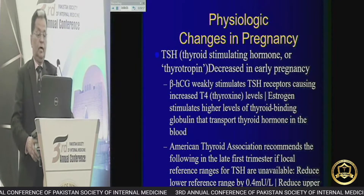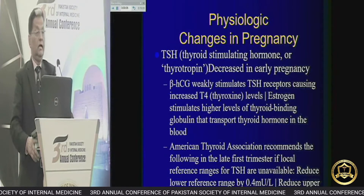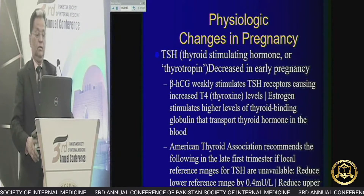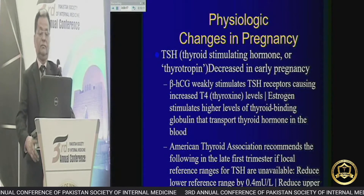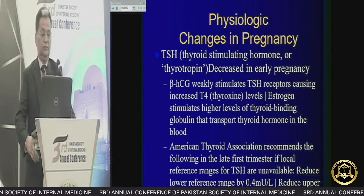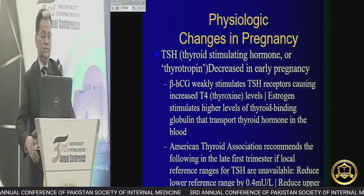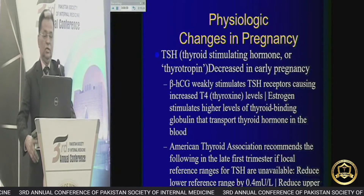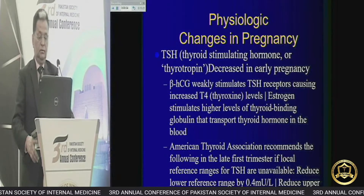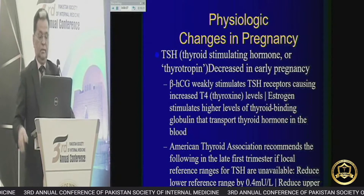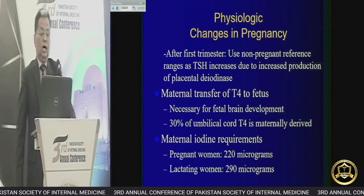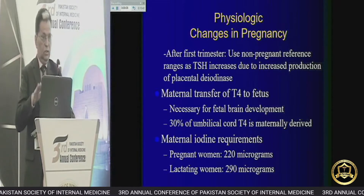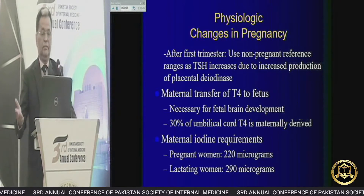TSH — thyroid stimulating hormone, or thyrotropin — decreases in early pregnancy. T4 increases because estrogen stimulates a higher level of thyroid-binding globulin, which transports thyroid hormone in the blood. The American Thyroid Association recommends that if local reference ranges are not available in the first trimester, TSH level should be 0.5 micro-units per liter. After the first trimester, use the non-pregnant reference range.